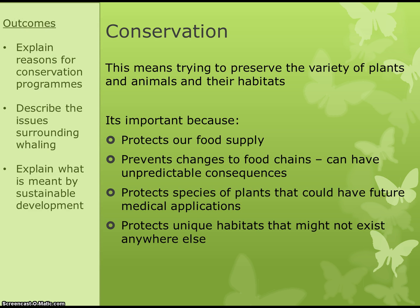First, we need to talk about conservation. Conservation means trying to preserve the variety of plants and animals and preserving their habitats. The reasons we need to do this are to make sure we have food — if we kill off all the cod, no one will be able to have fish and chips anymore. It also prevents changes to food chains, because it can have unpredictable consequences if an animal is removed from a food chain.